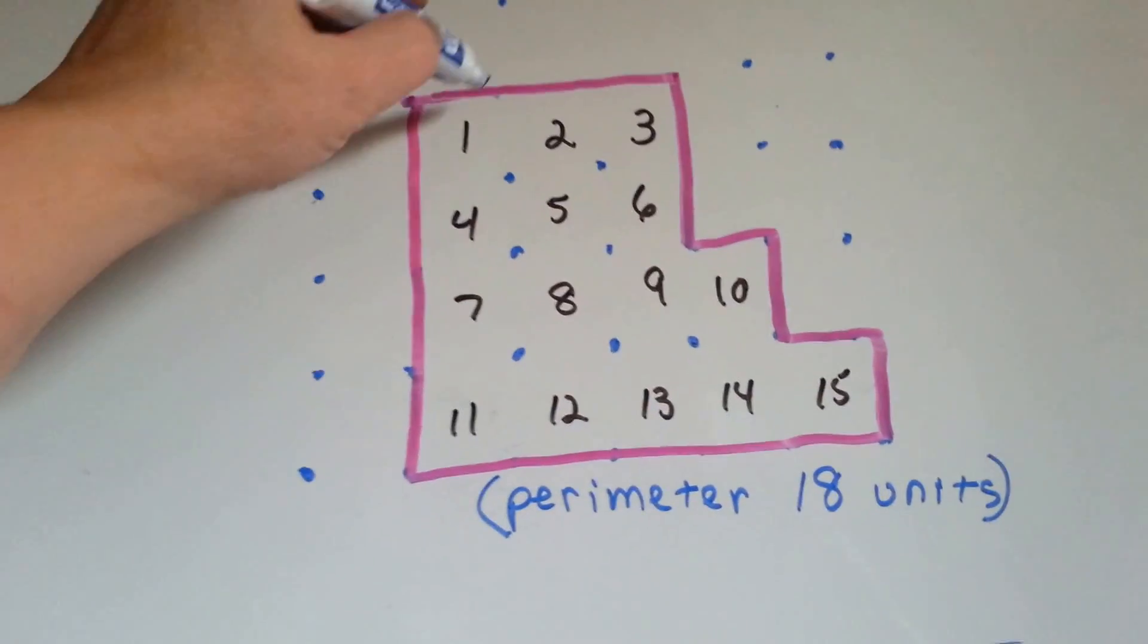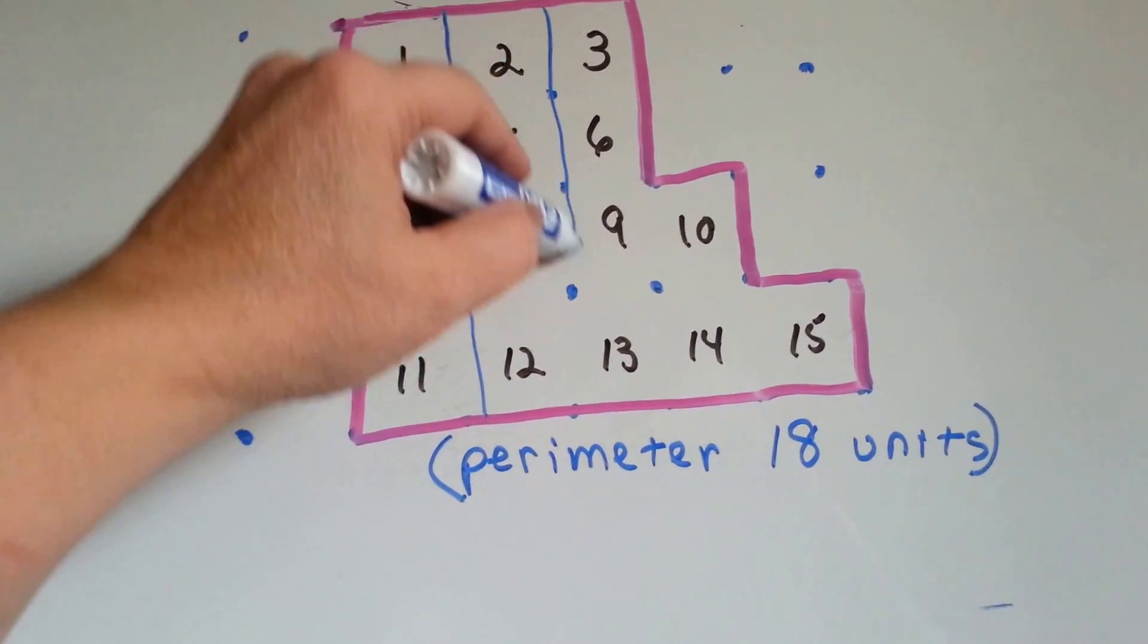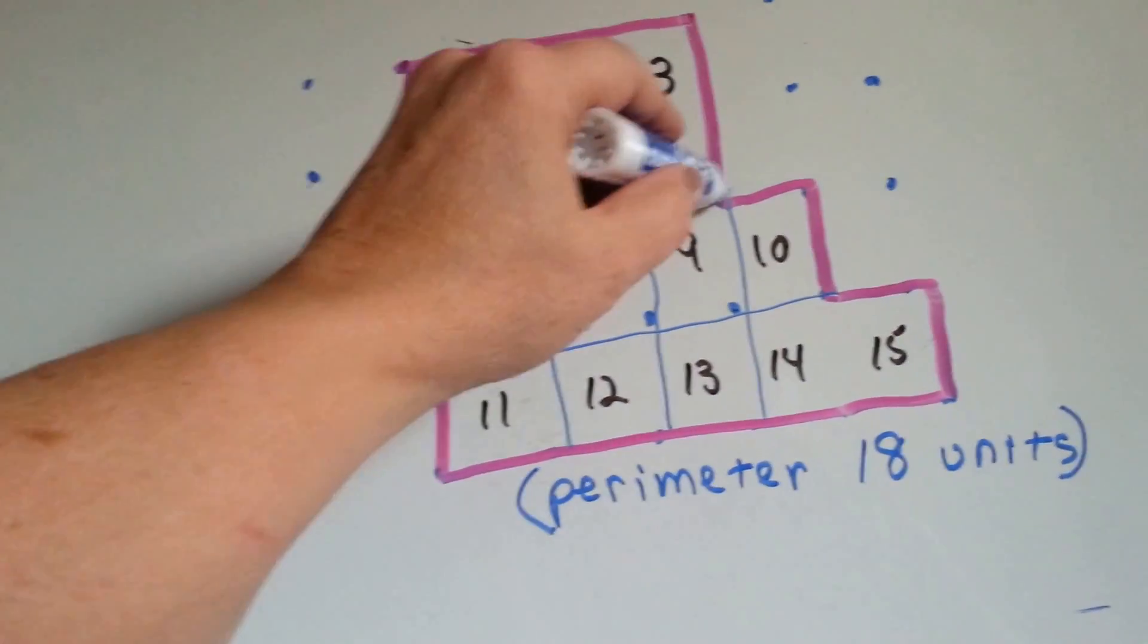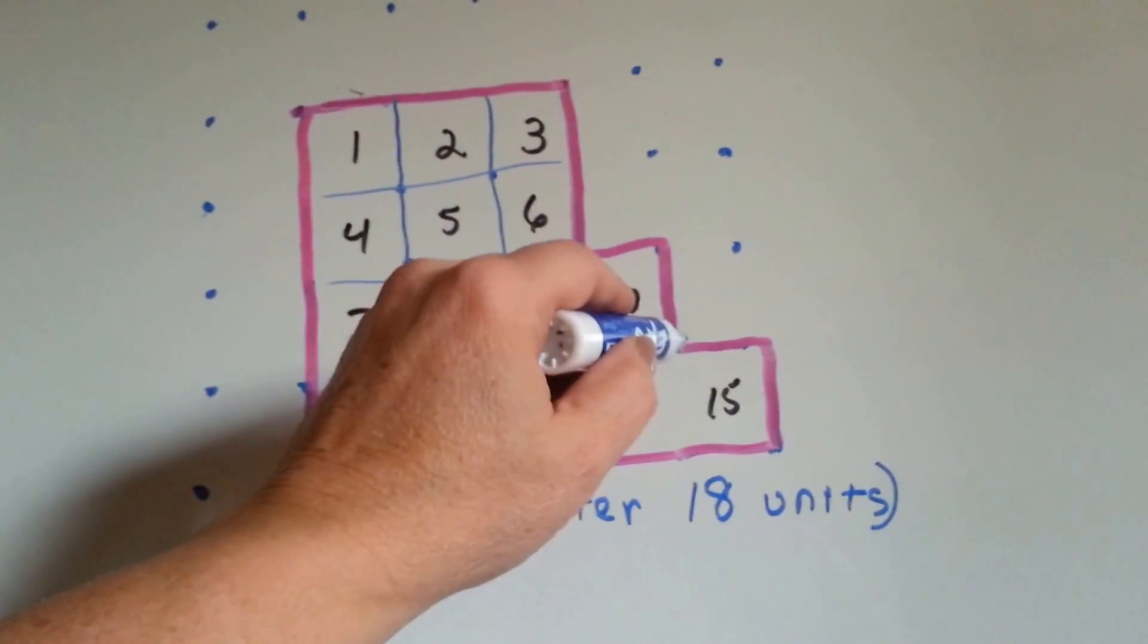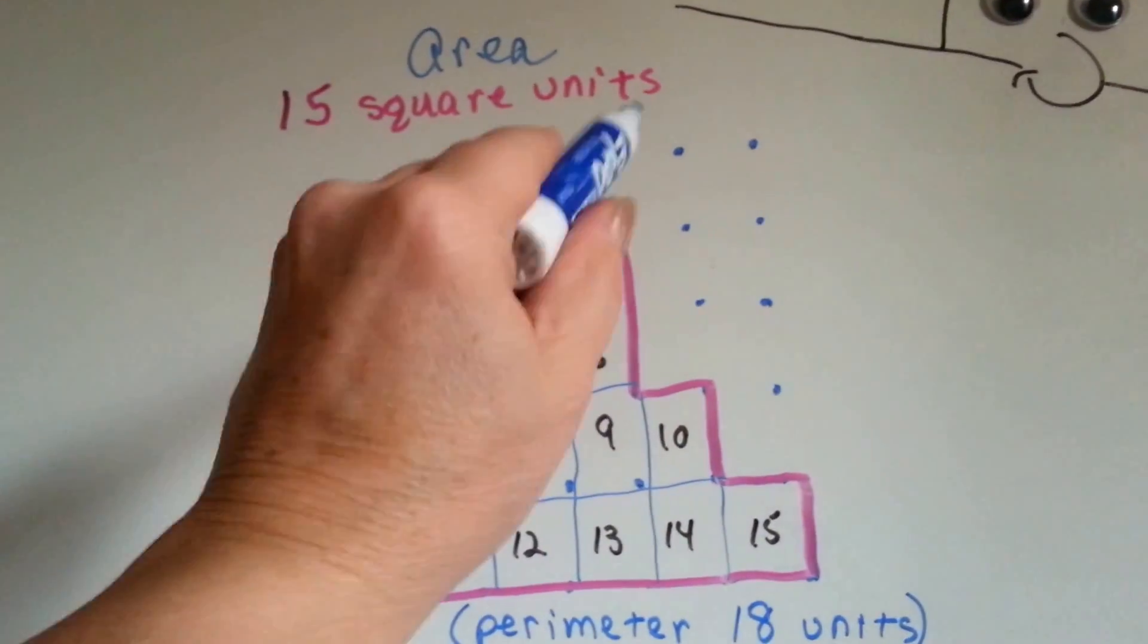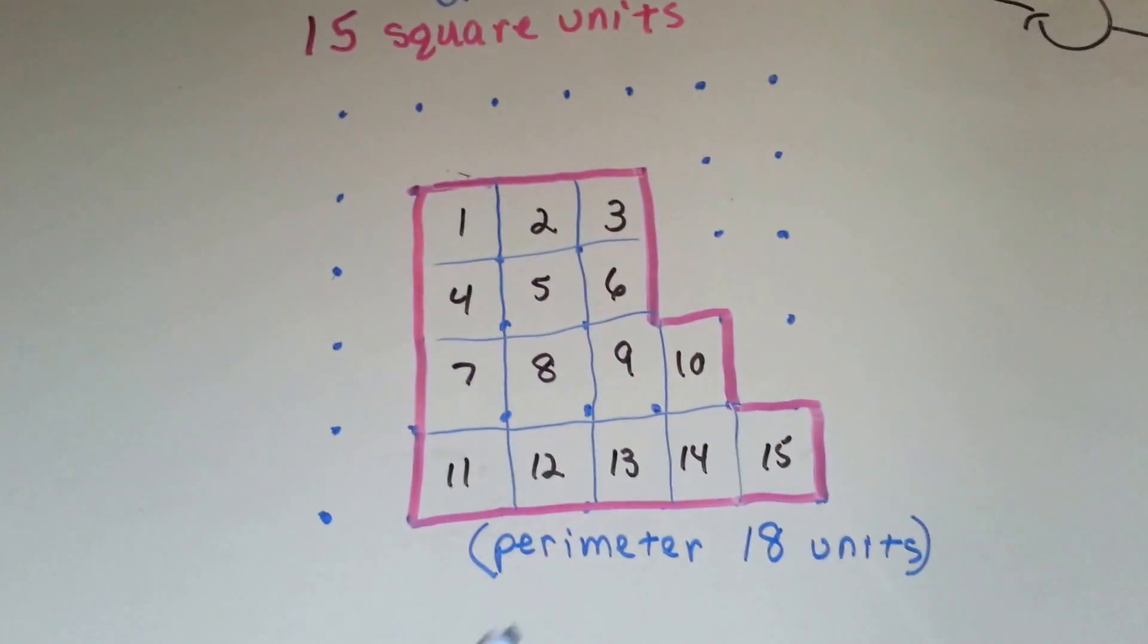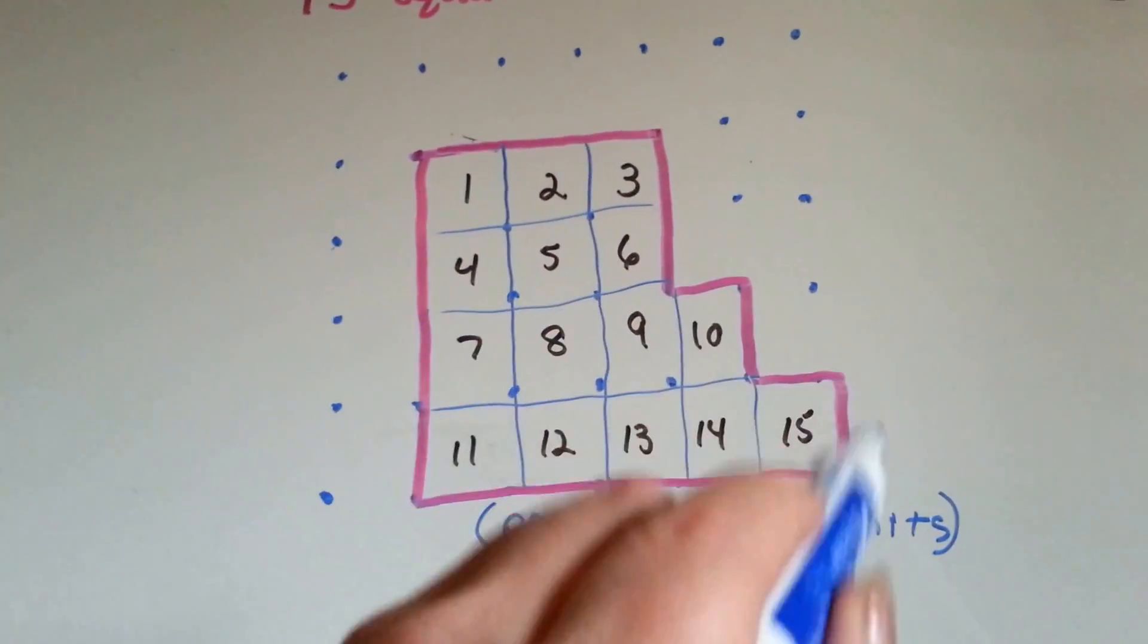So let's look at this. I made this shape, and if you connect the lines, you can see that there's fifteen square units. That's the area inside of it. The perimeter, though, is how many of these separate little lines go around the edge.